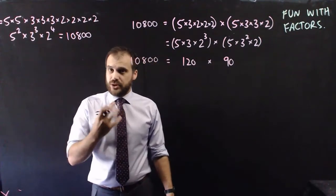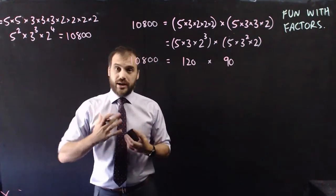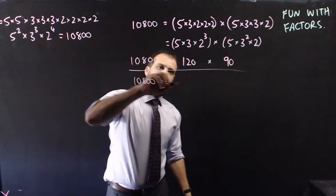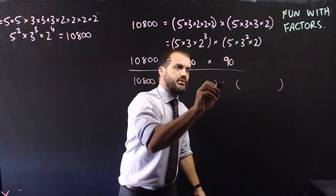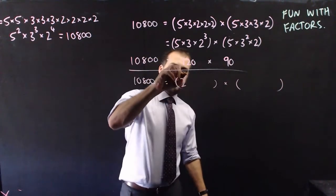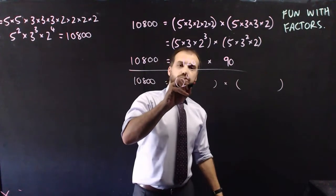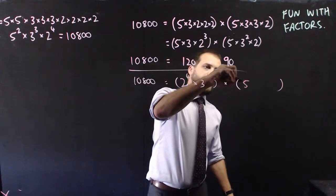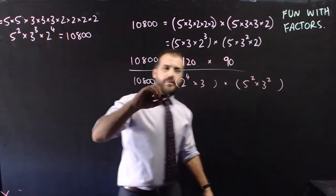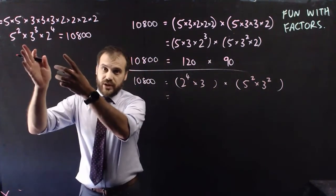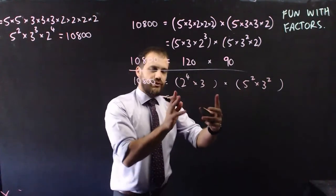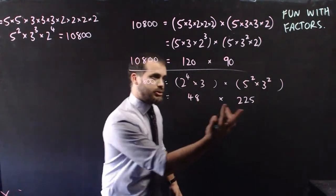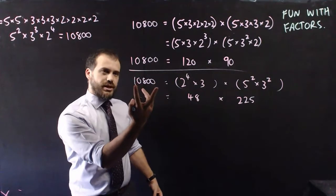This is a really creative process because we can combine those in any way that we want. What other set of factors could I do? Maybe I'll put all of the 2's here and just one of the 3's, and then put all the stuff that's left over — 5 squared and two 3's — on the other side. In this instance, we have 48 times 225, and I can be sure that it equals 10,800.